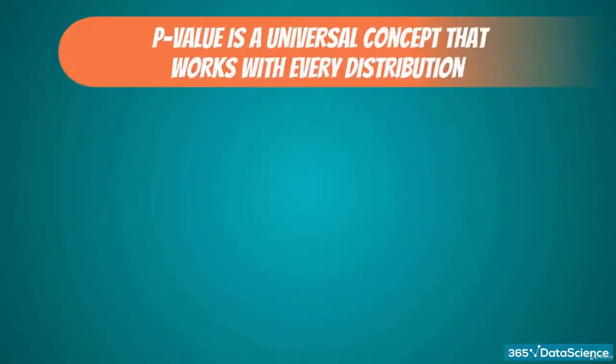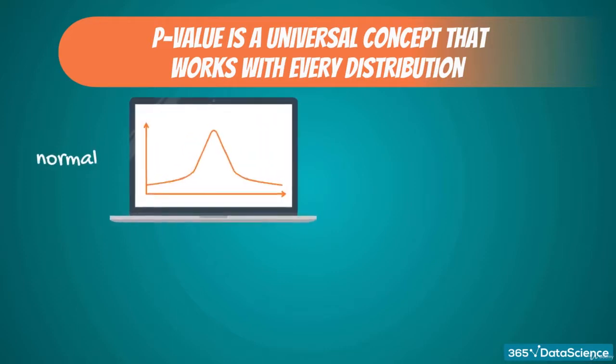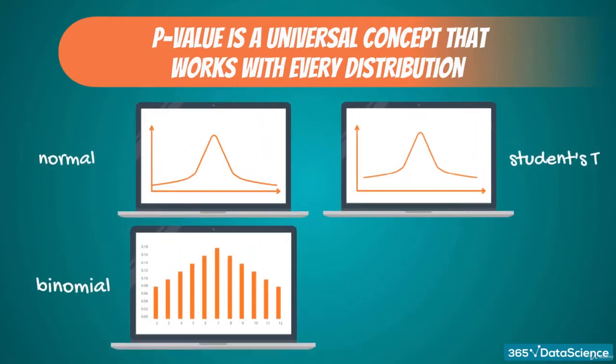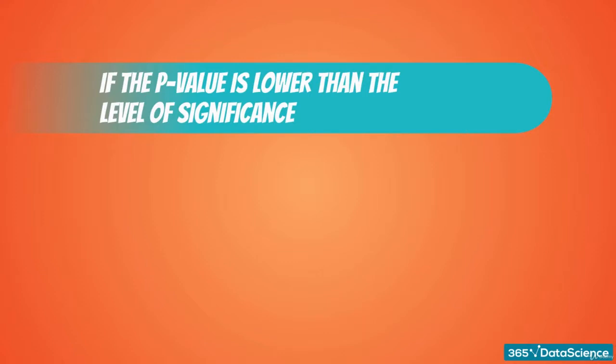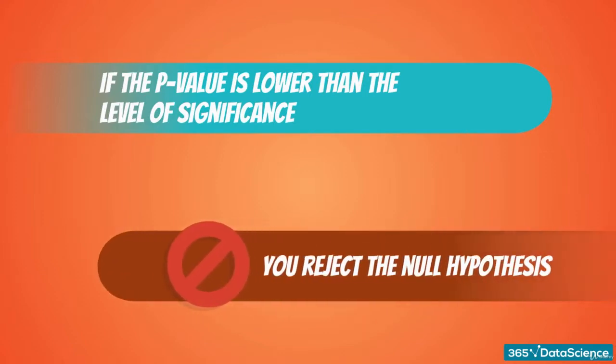The final consideration is that the p-value is an extremely powerful measure as it works for all distributions. No matter if we are dealing with the normal, students' t, binomial, or uniform distribution. Whatever the test, the p-value rationale holds. If the p-value is lower than the level of significance, you reject the null hypothesis.